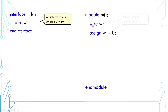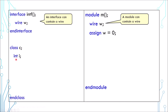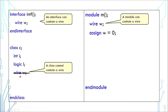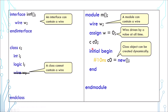Today we're going to talk about the relationship between class and interface. This is an interface — it can contain a wire. This is a module — it also can contain a wire, and you're supposed to drive a wire with continuous assignment. This is a class — it can contain an int or a logic, but can it contain a wire? The answer is no. If you look at the continuous assignment, it implies that the wire should exist at all times.